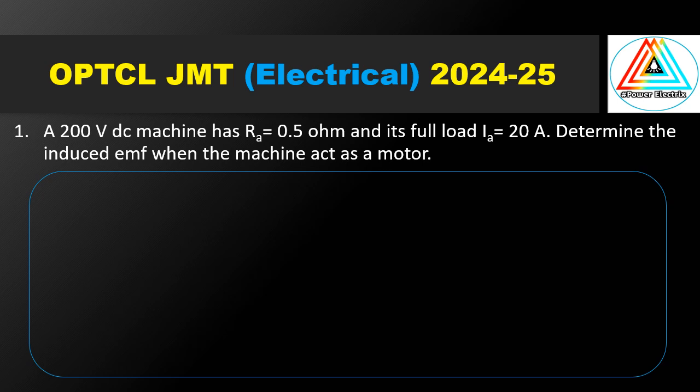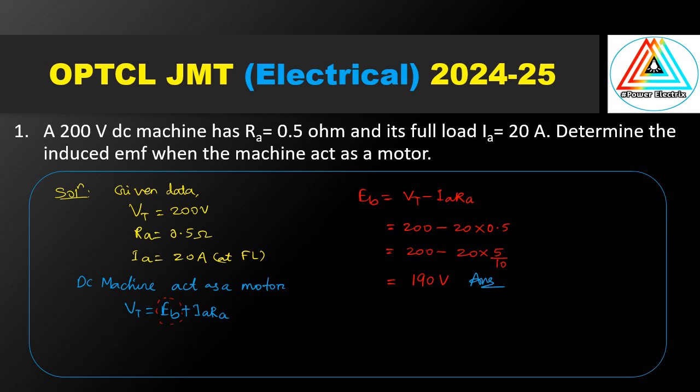We represent the DC machine as a DC motor. When acting as a motor, we need to find the back EMF. Given data: terminal voltage 200 volt, Ra 0.5 ohm, IA 20 ampere at full load. Terminal voltage Vt equals Eb plus IaRa, where Eb is the back EMF and IaRa is the armature voltage drop.